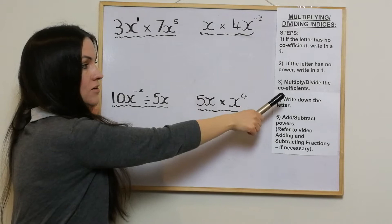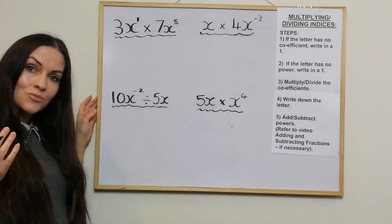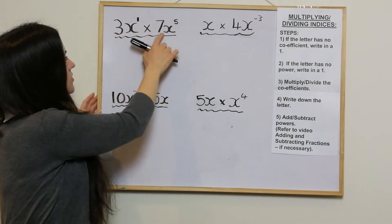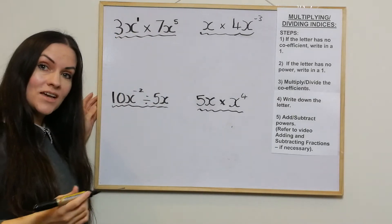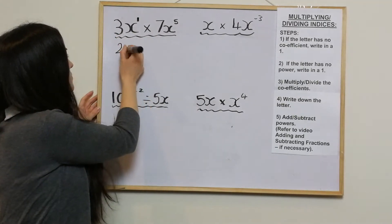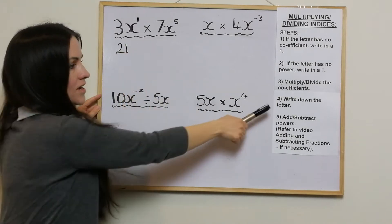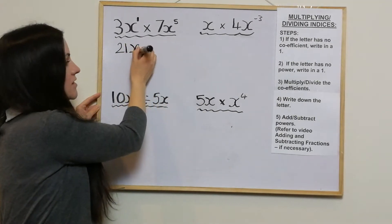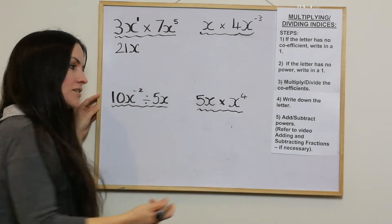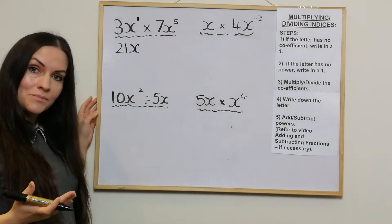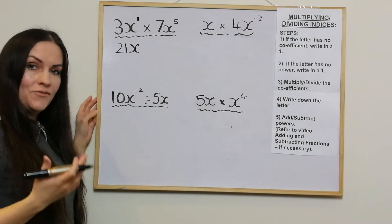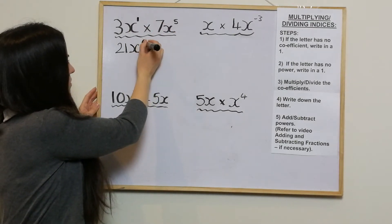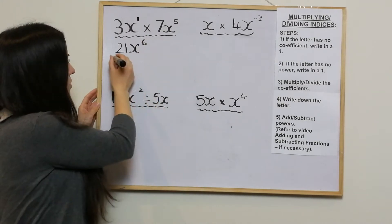Then it says multiply or divide the coefficients. Because it's a multiplication, we multiply those coefficients — so it's 3 times 7, which is 21. Then write down the letter, which is x. And then add or subtract the powers: if it's multiplying, you add the powers; if it's dividing, you subtract. In this instance we add, so it's just 21x to the power of 6.